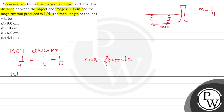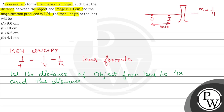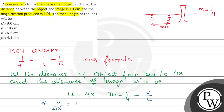Let the distance of the object from the lens be 4x. If our distance of the object is 4x and the magnification is 1/4, and we know that magnification equals v/u, then v/4x = 1/4, which gives us v = x.